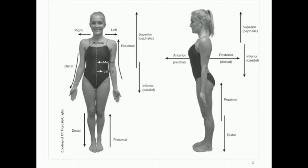The last directional terms are anterior and posterior. Posterior means towards the back side and anterior means towards the front side. For example, the gluteus maximus muscle in the rear is a posterior muscle with respect to the rectus abdominis, the abdominal muscles, which are more anterior.